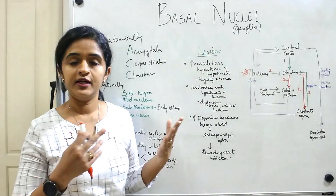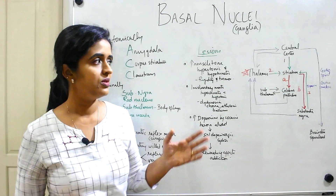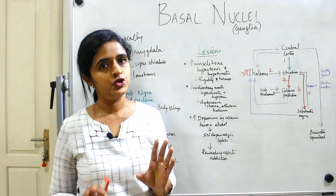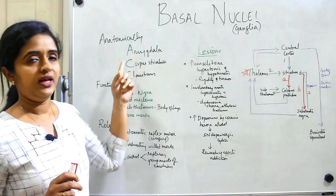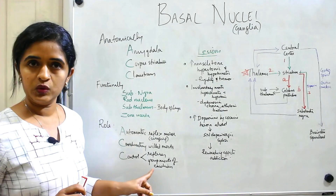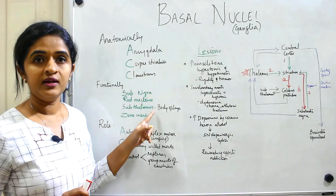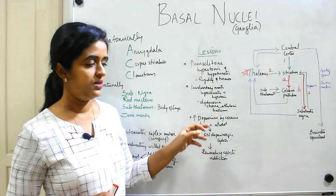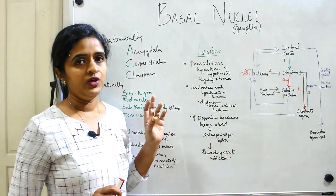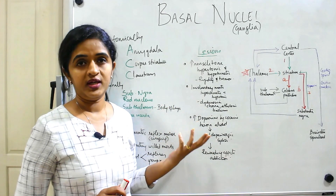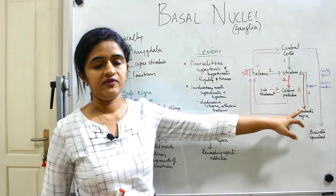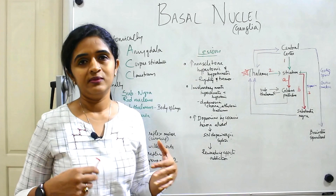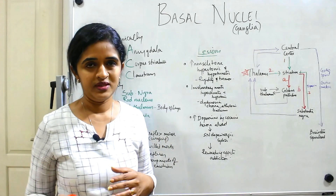To summarize: basal nuclei — remember ACC for anatomical components and functions; know the important nuclei contributing functionally; understand the lesion mechanisms — increased muscle tone, involuntary movements; understand how addiction to drugs like cocaine, heroin, and alcohol relates to dopamine and the substantia nigra; and know the neurocircuitry of the basal nuclei. The remaining detailed connections will be covered in coming sessions.